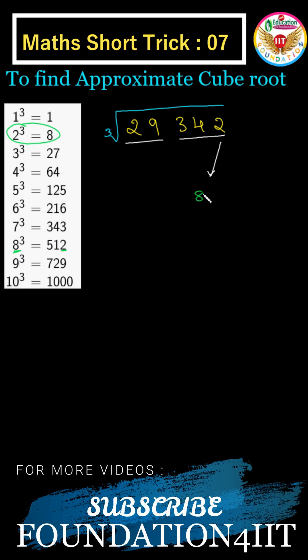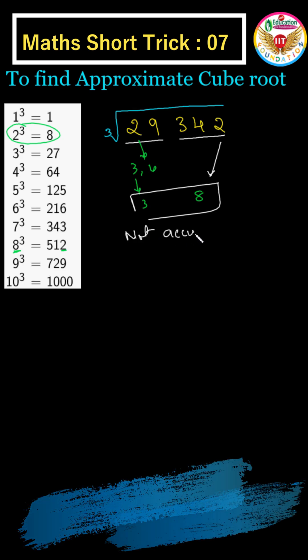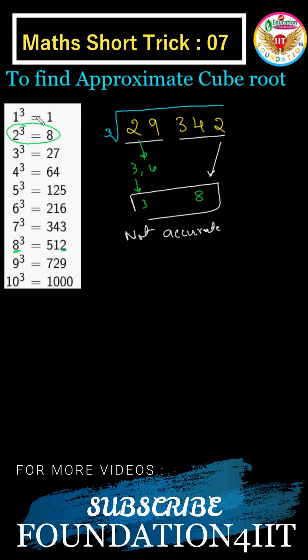We can take it as 8 and 29 between 3 and 4. So 3 or 4, if you take 3, 38 we are getting, but 38 is not accurate. This is not accurate because 29,342 is not a perfect cube.